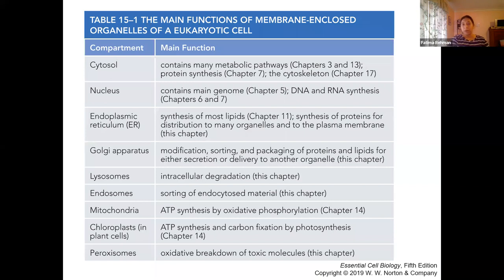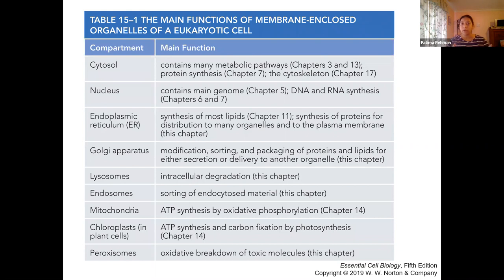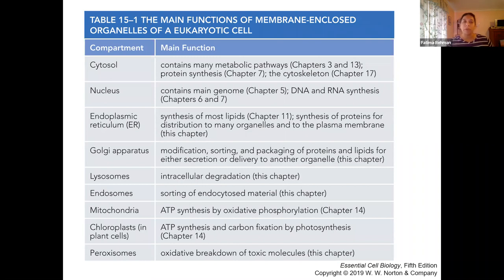The smooth ER is very specific to the cell type. In the liver, it is used to detoxify liver cells — for example, for alcohol or any other drug use, that is the site of detoxification. In general, the smooth ER is used for synthesis of lipids, as well as steroids and specifically cholesterol molecules.